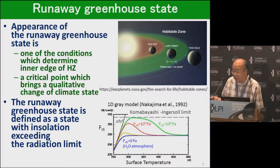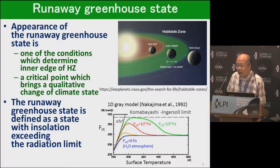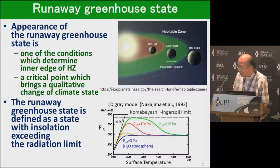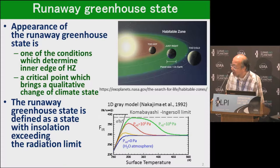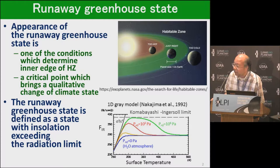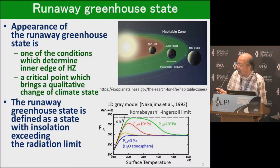The runaway greenhouse state is defined by a vertically one-dimensional model. This figure shows the result of a one-dimensional model — the relationship of surface temperature and infrared radiation emitted from moist atmospheres. This result was obtained by a vertically one-dimensional radiative convective equilibrium model for a gray atmosphere. The red line shows a case with a surface pressure of 1 bar, and there exists an upper limit of infrared radiation, called the radiation limit. When insolation exceeds this radiation limit, the atmosphere cannot reach equilibrium, and this is the emergence of the runaway greenhouse state.